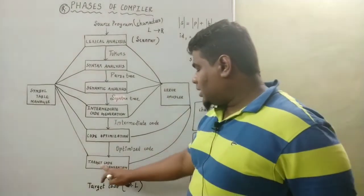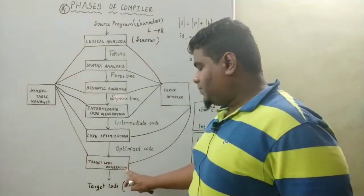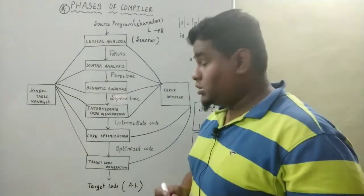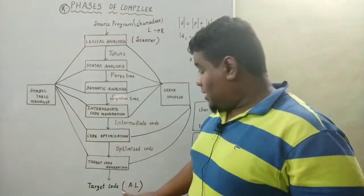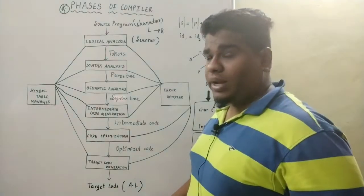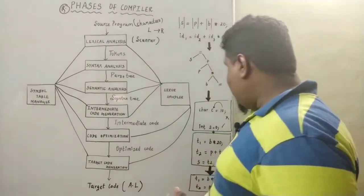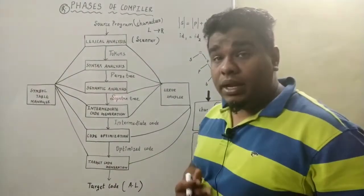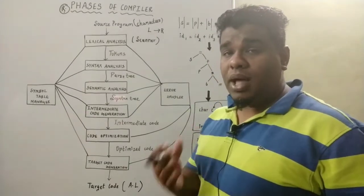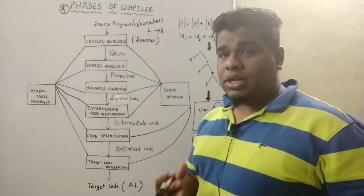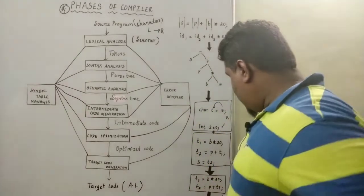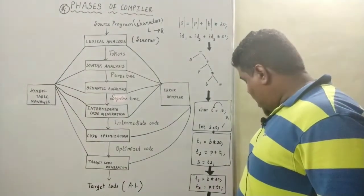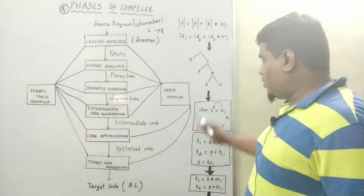Now I will move on to target code generation. The main aim of target code generation is to produce the target code, that is, assembly language code. In assembly language we use mnemonics like mul, sub, and add. For example, we would write mul r1 into r.